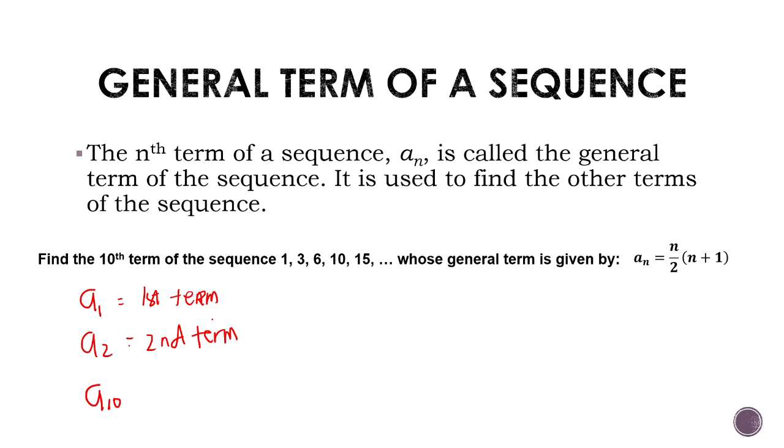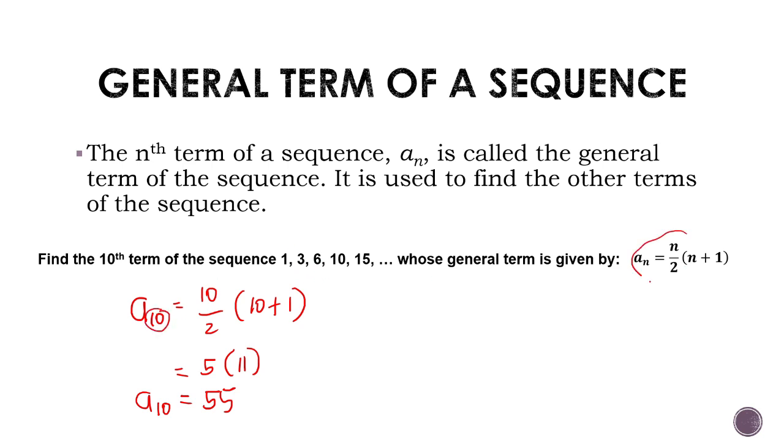What we need in this problem is a sub 10, the 10th term. The sequence only gives the first 5 terms, which is 1, 3, 6, 10, and 15. For us to solve that, we're just going to substitute 10 in place of n in the general term. Replace all n with 10, and we're just going to solve for the result. And so, the 10th term of that sequence is 55. We don't need to investigate the pattern anymore, we just have to substitute this number to the general term.